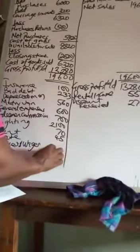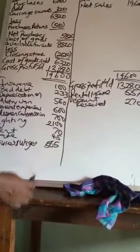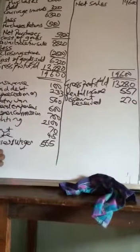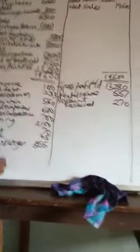211 naira. We have stationary, 340 naira. By the time you add all this, gross profit plus other income, it will give us 14,107.